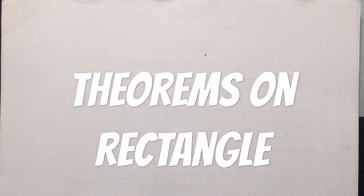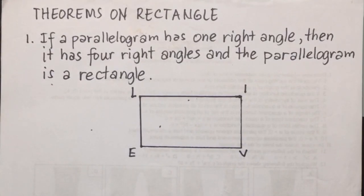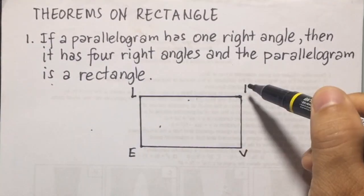Hi guys! Our next video will be about theorems on rectangle. Theorem number 1. If a parallelogram has one right angle, then it has four right angles and the parallelogram is a rectangle. So, we have here a parallelogram LIVE.